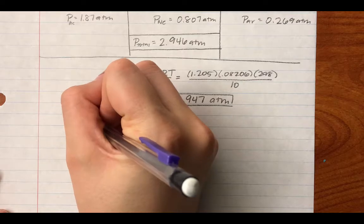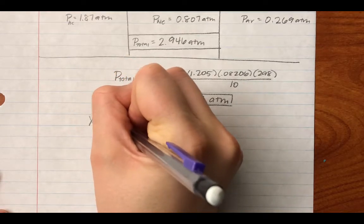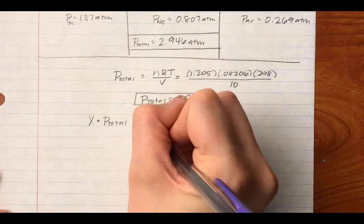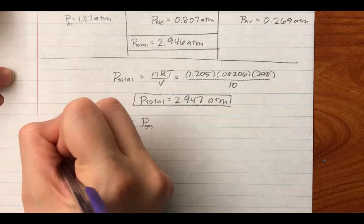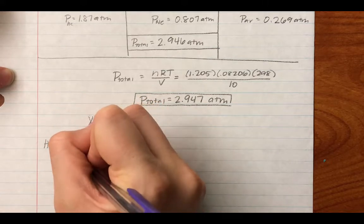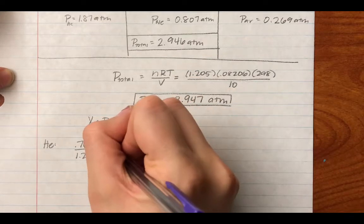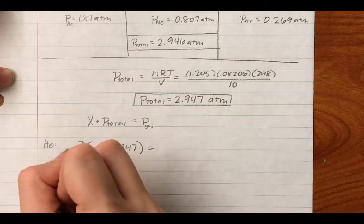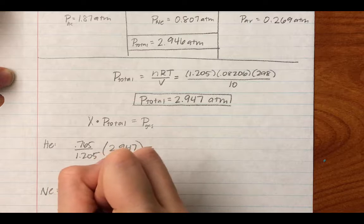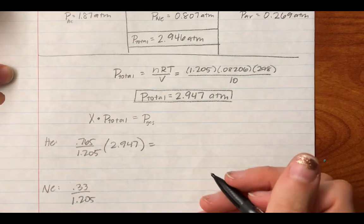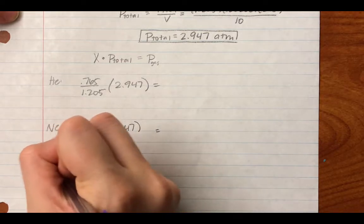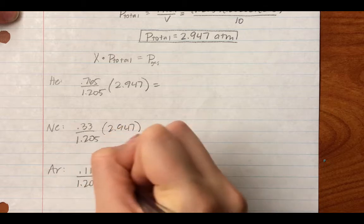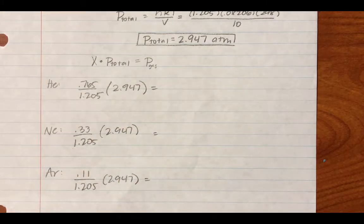Now, to solve for my partial pressure, I can use my mole fraction times my total pressure. So I can take for helium, 0.765 divided by my total, 1.205 times total pressure. That will give me my partial pressure. Same thing for neon: 0.33 divided by my total number of moles times my total pressure. And then I can do the same thing for argon. So notice there are two different ways you can go about solving this problem, and you'll get the same thing both times.